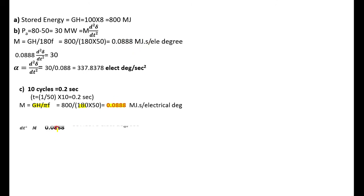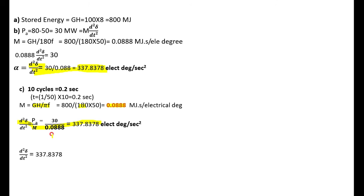The same M value is taken here. Once again, d²δ/dt² is also calculated, which equals 3.378 radians per second squared. Reproducing this value again: d²δ/dt² = 337.87 electrical degrees per second squared. And Pa/M equals approximately 3.008.